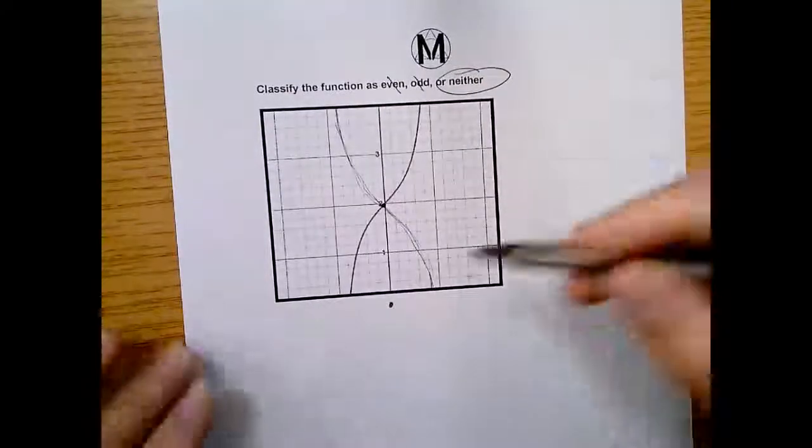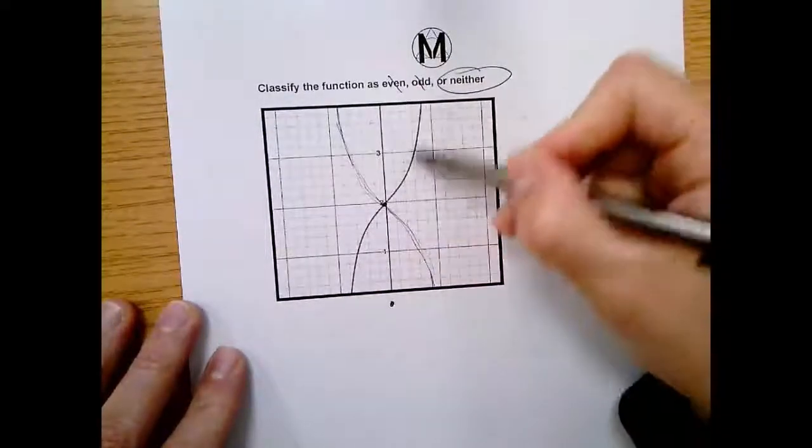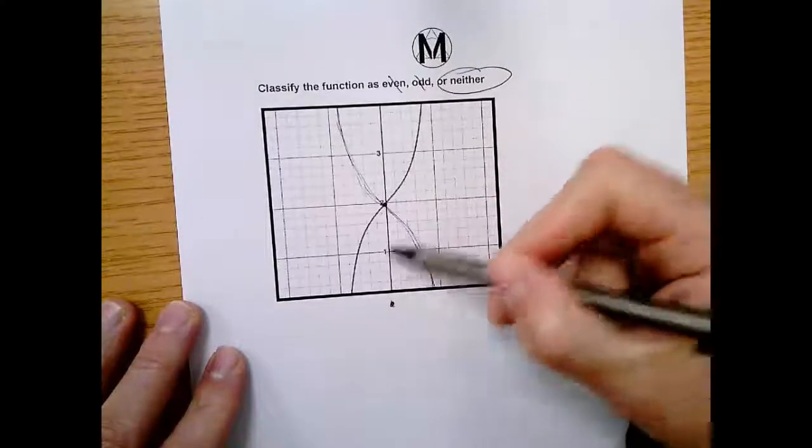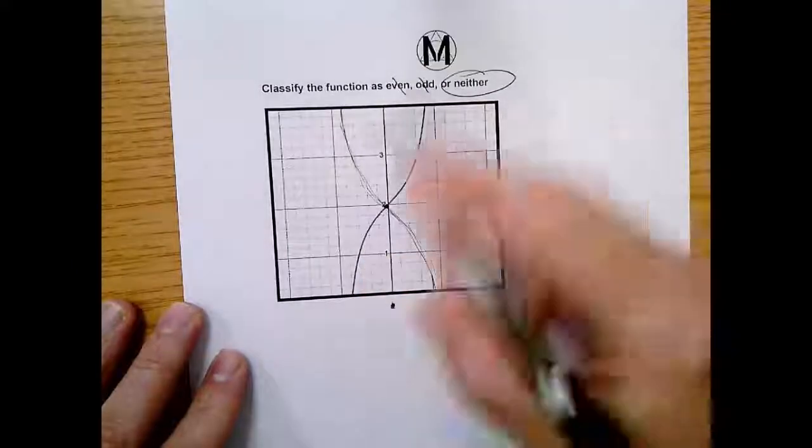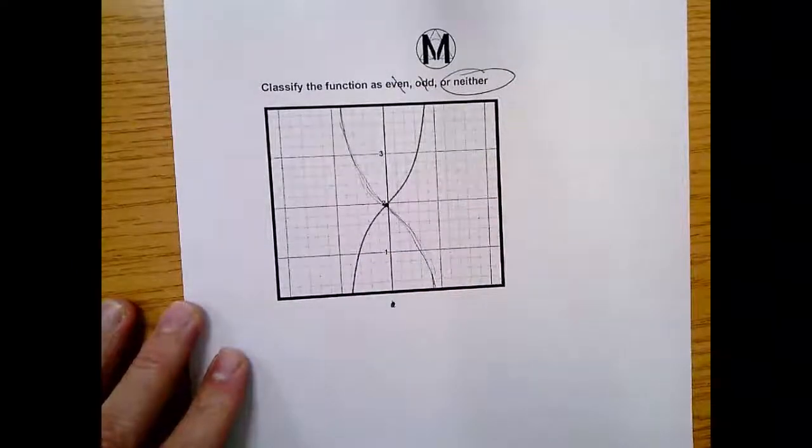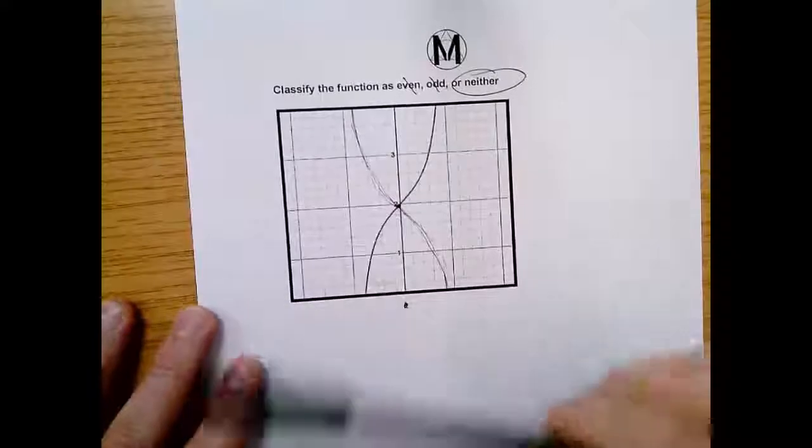Be careful because lots of times these functions are odd because they're touching the origin. But this one is not. It has been shifted up. So it's not touching the origin. So it cannot be odd. So it actually is neither. So don't fall for that trap. It's a bit of a trick.